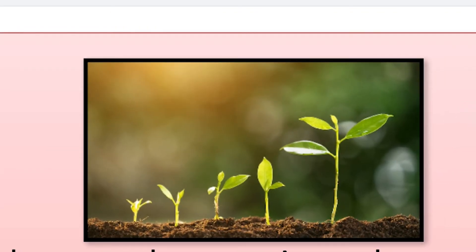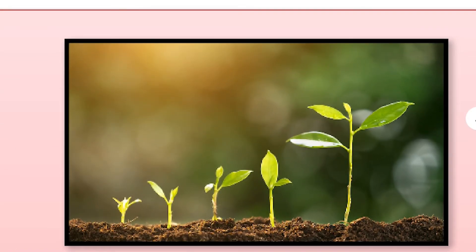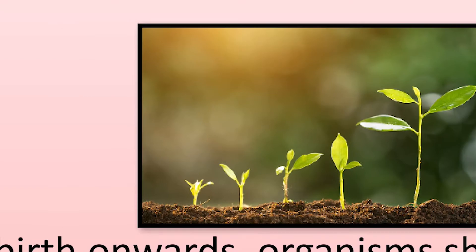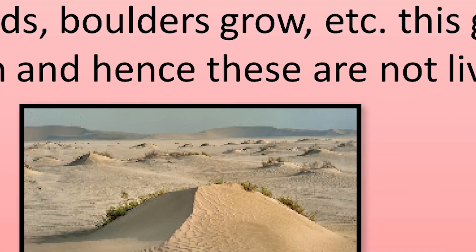The next characteristic is growth and development. From birth onward, the organism shows a tendency for growth and development, which is a well-organized, well-orchestrated process. As observed in the diagram, a seed germinates and gives the plumule and radicle — the plumule grows into the shoot system and the radicle into the root system. The seedling develops and slowly grows into a tree, shrub, or herb depending on the organism.